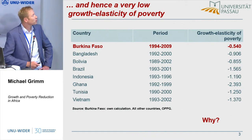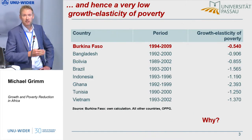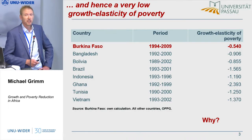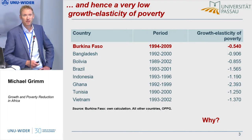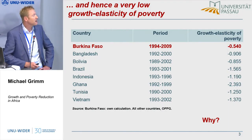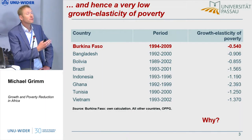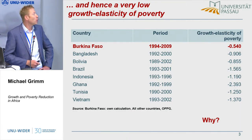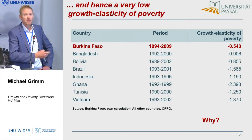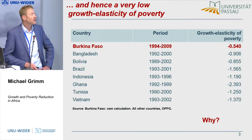Here you see the growth elasticity of poverty — just relating the change in poverty to the change in GDP per capita. It's minus 0.5, which is really low. You see a few other countries here for comparison. By international standards, this is really a low growth elasticity of poverty. So there's something here with the distribution that we need to understand.